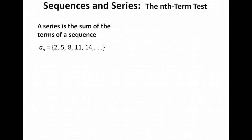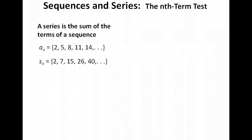Now what we want to do is look at the sum of the terms of the sequence, or what we call a series. We're going to take the terms of the sequence and add them together. So our first term was just 2, the sum of the first two gives us 7, and the sum of the first three is 15, and so on.